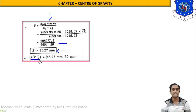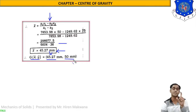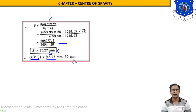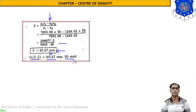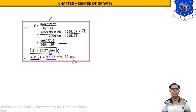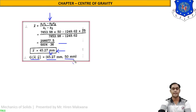So the center of gravity has x-coordinate = 45.27 mm and y-bar = 100/2 = 50 mm. In today's lecture we discussed two numericals: the first is symmetrical about the y-axis and the second is symmetrical about the x-axis. In the next lecture we will start a new topic in the same chapter. Practice these numericals well and ask for any doubts. Thank you very much.